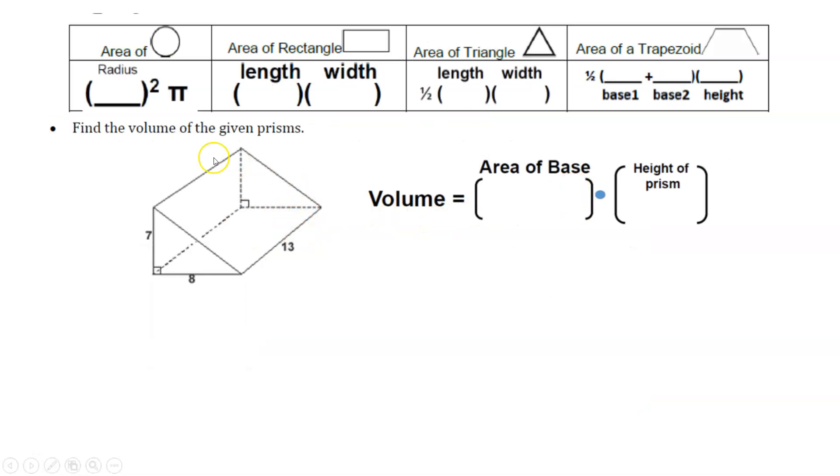The basic volume formula is volume equals the area of our base times height. As you can see here, they give us a base that looks like a triangle. So one-half length times width. And for height, this right here would be our height. So let's go ahead and do that now.